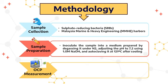The medium was prepared by degassing it under nitrogen gas to create an anaerobic environment, adjusting the pH, and autoclaving. The bacterial cells were then separated from the medium through centrifugation and made ready to be used.